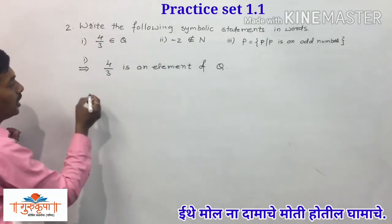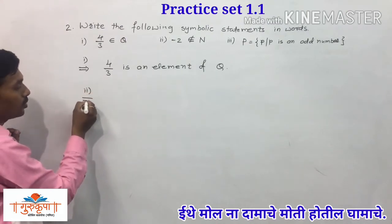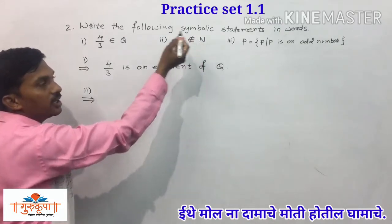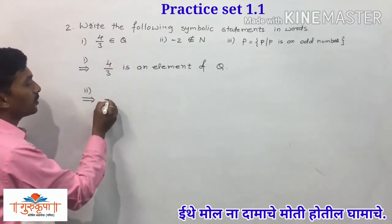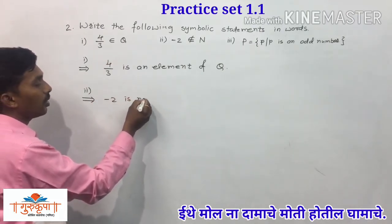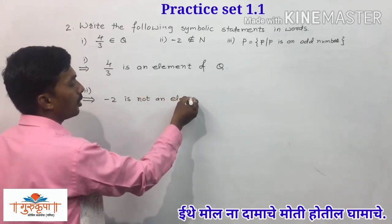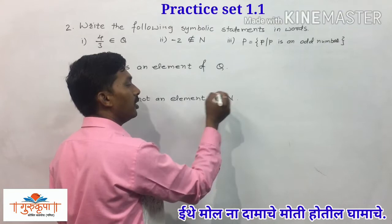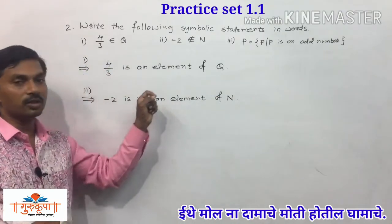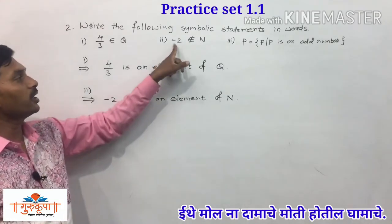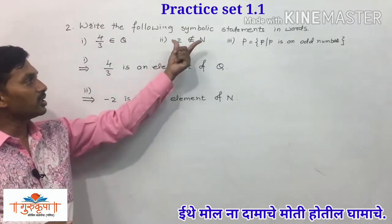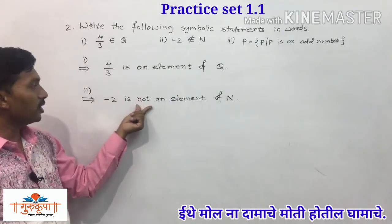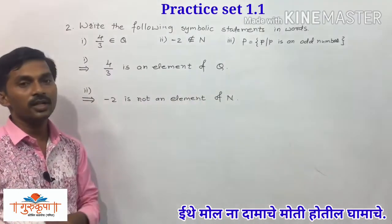The second symbolic statement: we can write it as minus 2 is not an element of N. N is the set of natural numbers. So here we write: minus 2 is not an element of N, meaning minus 2 is not a natural number. This is the symbolic statement written into words.